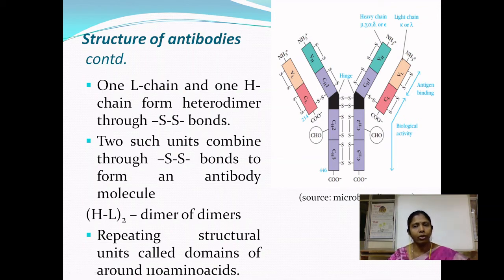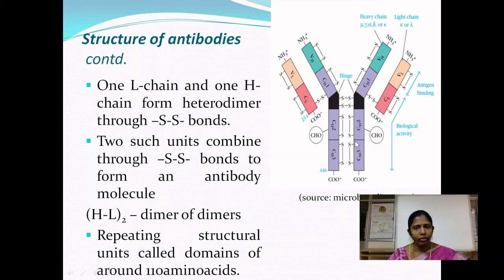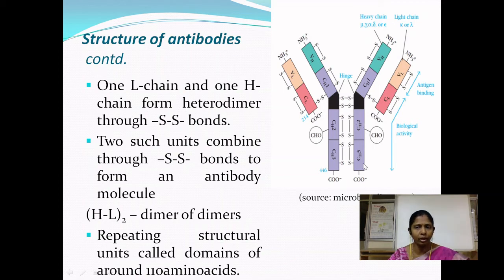The light chain has two domains and the heavy chain has four or five domains depending on the antibody isotype. Each antibody molecule has an N-terminal region and a C-terminal region — antigen binding occurs at the N-terminal region and the crystallizable nature is possessed by the C-terminal region. Glycosylation of the antibody molecule occurs in the C-region; the Fc fragment contains the glycosylation moiety.